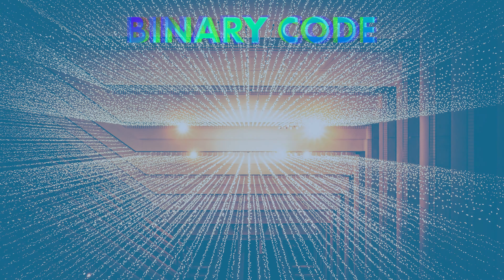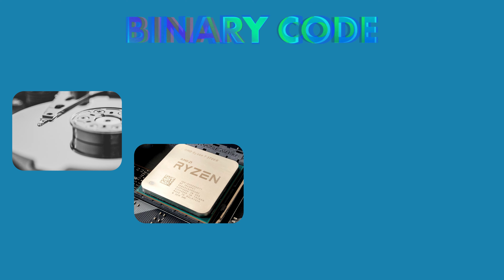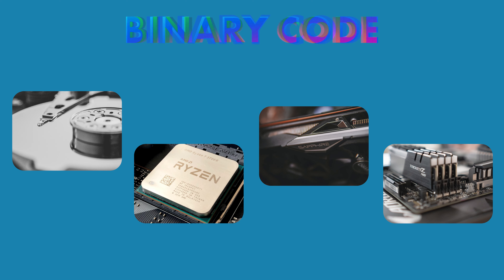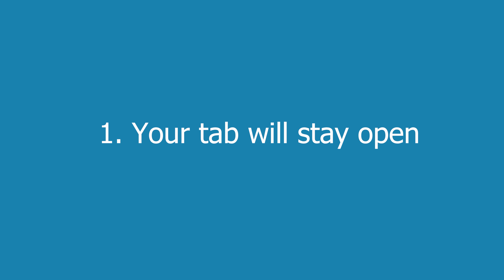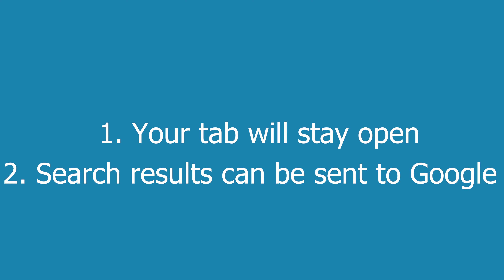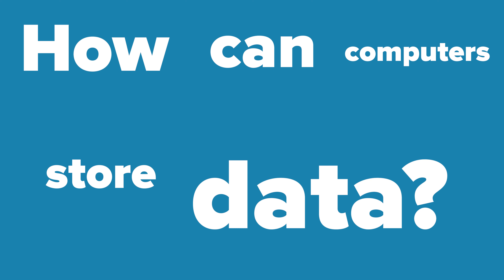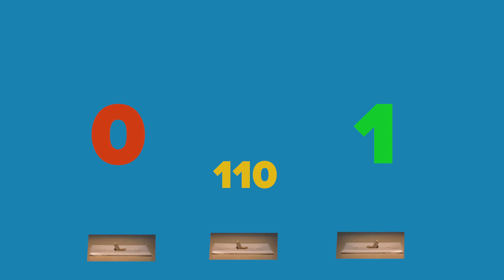That solution is binary code. Computers need a way to store data in every single aspect — not just hard drives, but processors, graphics cards, RAM, and other components need to store data to then process it. For example, when you open Google Chrome and perform a search, your computer needs to store that search so your tab stays open and the search can be sent to Google. So how can computers store data? How about switches? Switches can have two different outcomes: on or off, true or false, one or zero — which is binary code. Zeros and ones, each number corresponding to a different switch. Each number is known as a bit.